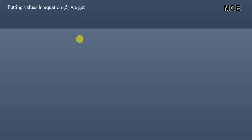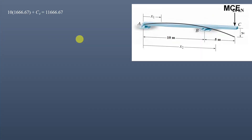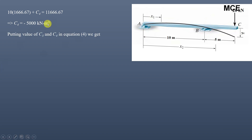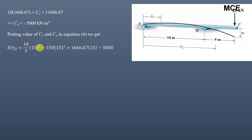Substituting C3 = 1666.67 into equation 5 gives C4 = −5000 kN·m³. Placing C3 and C4 into equation 4 and evaluating at x2 = 15 m (point C): EI·y2 = (10/3)(15)³ − 150(15)² + 1666.67(15) − 5000, which gives EI·y2 = −2500 kN·m³.